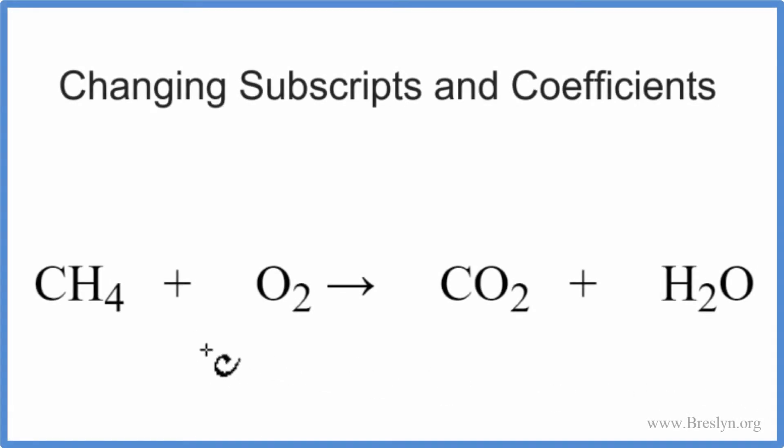When we balance chemical equations, we can't change the subscripts. And the subscripts, they're the numbers after the element symbol, these little numbers here. And if there's no number written, we assume that to be 1.